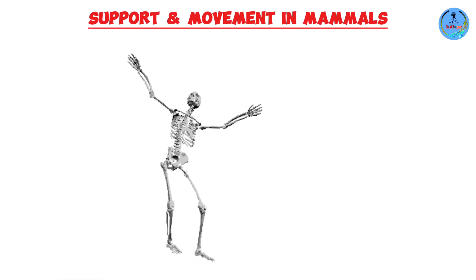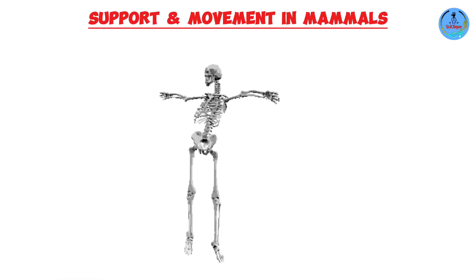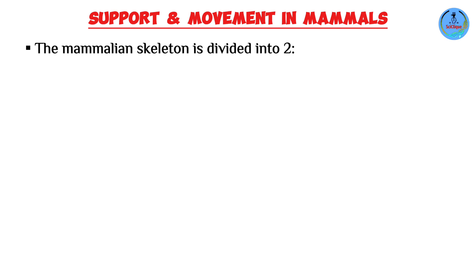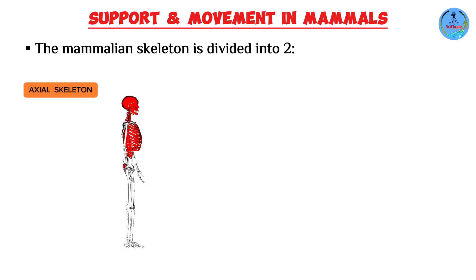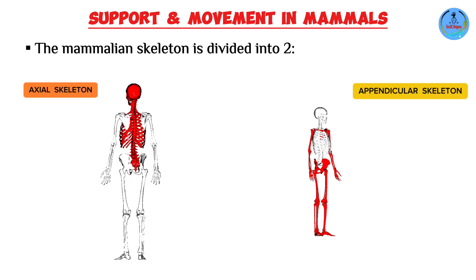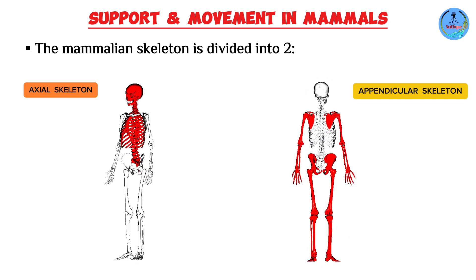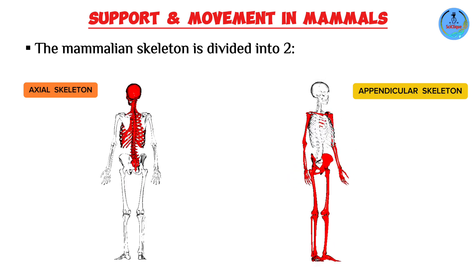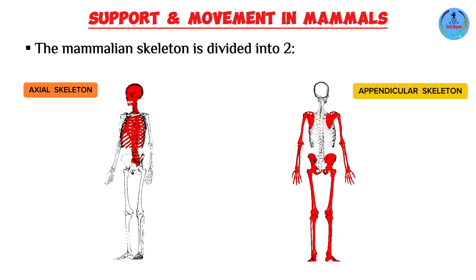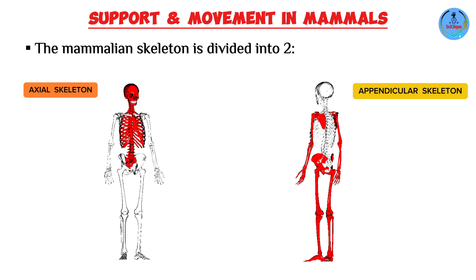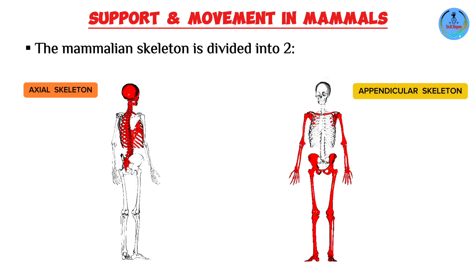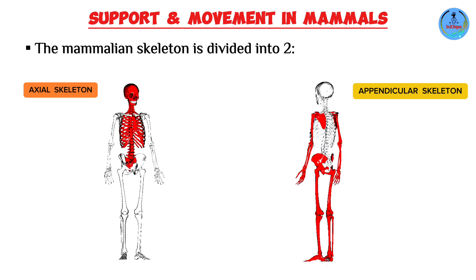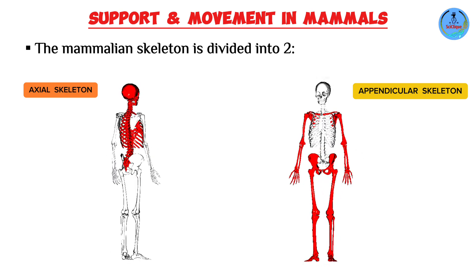Let us discuss the mammalian skeleton. The skeletal system in mammals can be broadly divided into two parts: the axial skeleton and the appendicular skeleton. In humans, we have 206 bones in an adult, and all of these bones are categorized into these two groups, mostly depending on their location and function.